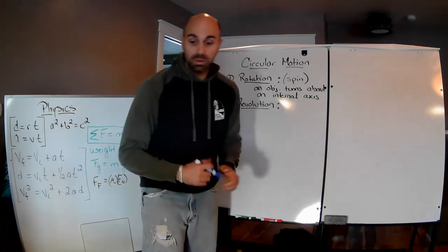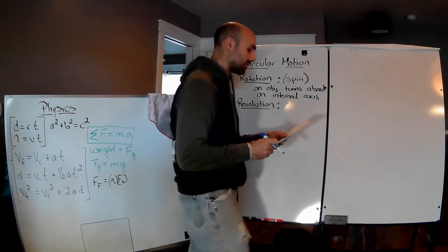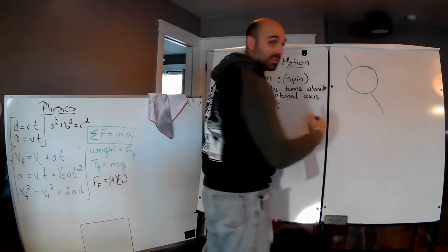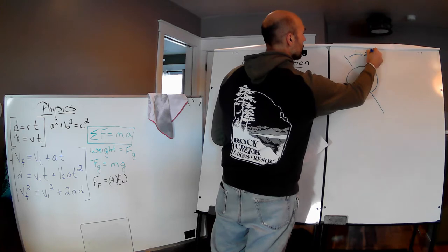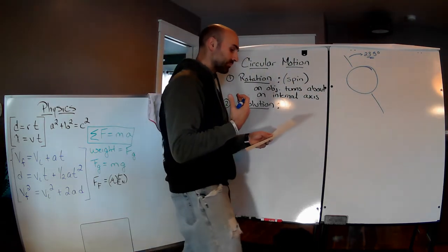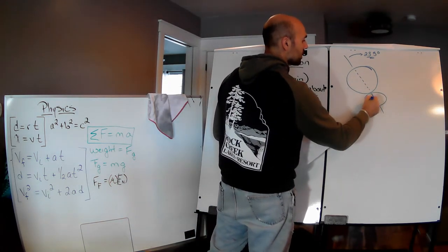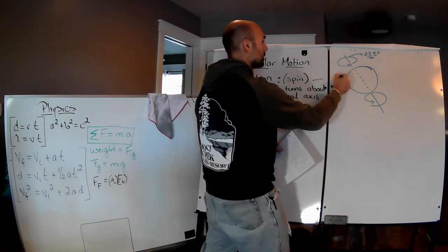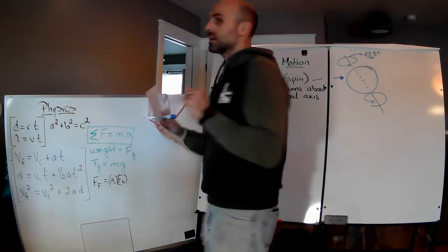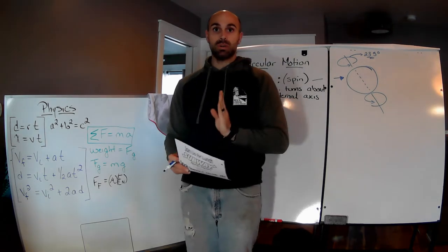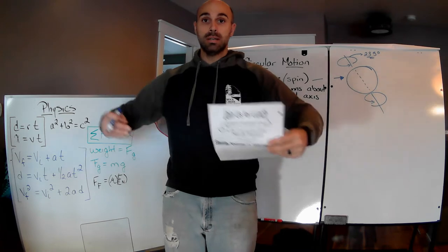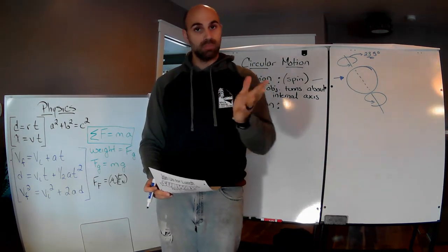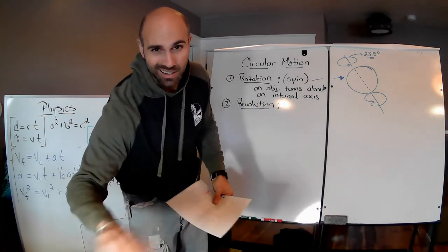When we talk about turning about an internal axis — let's take the Earth. The Earth is on a tilt of 23.5 degrees, and the Earth is rotating about itself, about an internal axis. That is a rotation. If I turn around like this, I'm rotating about this internal axis — think about a line going right through me. I'm rotating along that line, like a figure skater.